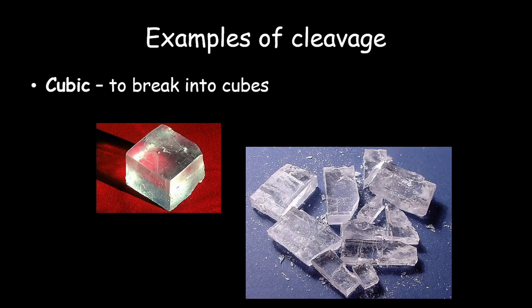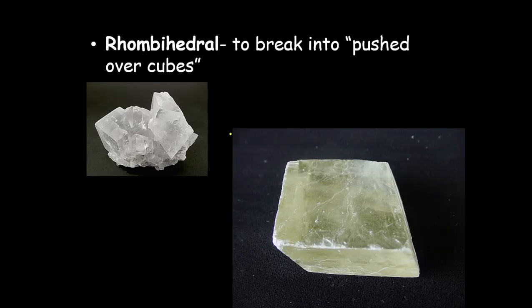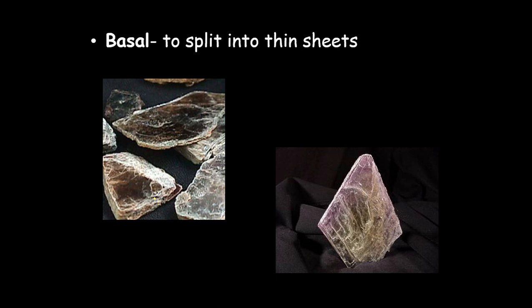Cubic cleavage — notice that when broken up, all pieces have squared-off cubic sides with 90-degree angles, and every single one looks similar. Rhombohedral cleavage looks similar but notice these sides are all bent — it doesn't come straight up like cubic cleavage. Then we have basal cleavage — these minerals are really cool because you can actually peel them apart, like separating the sheets of a notebook.